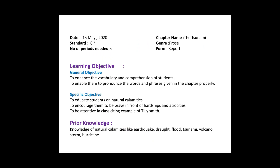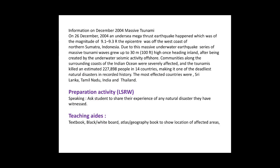The prior knowledge I need for this chapter is knowledge of natural calamities — I should be able to tell students about types such as earthquake, drought, flood, tsunami, volcano, storm, hurricane, etc. I also need information about the 2004 massive tsunami on which the chapter is based. It happened on 26 December 2004 when an undersea megathrust earthquake of magnitude 9.1 to 9.3 occurred, with its epicenter off the coast of northern Sumatra, Indonesia.